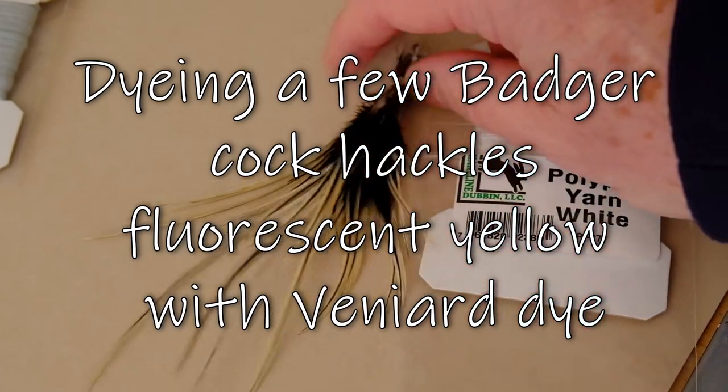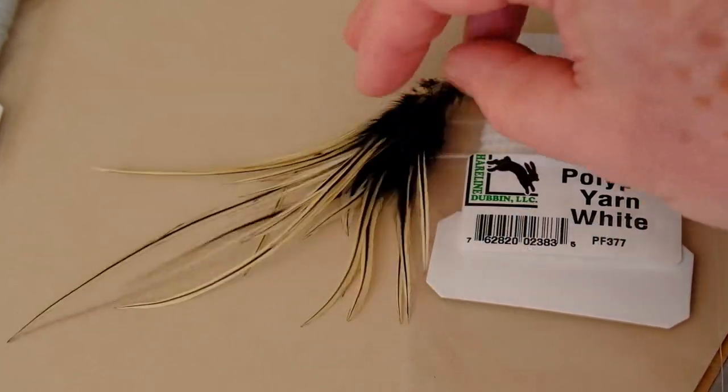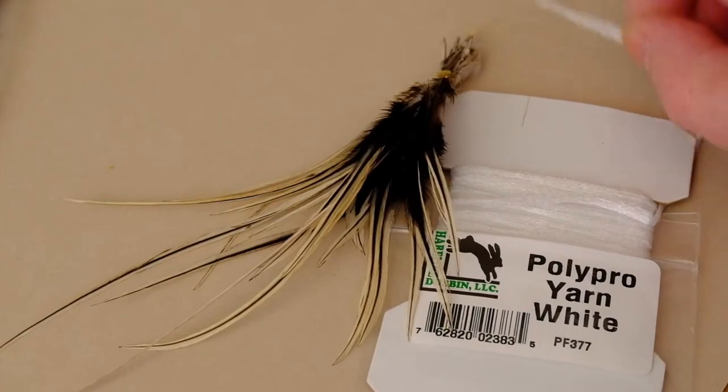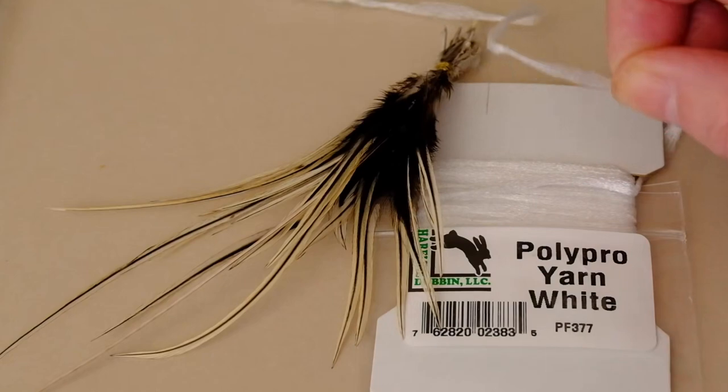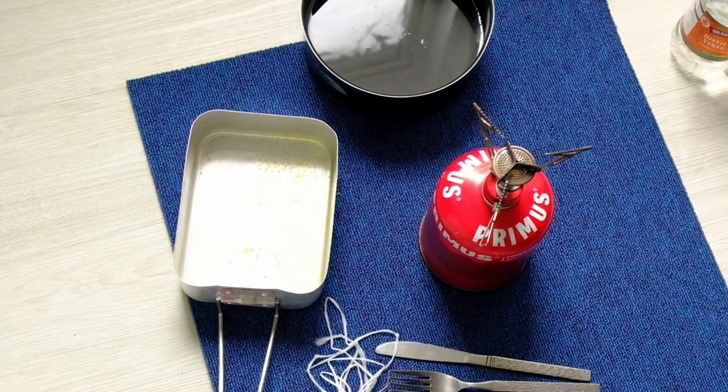Today I'm going to dye a few badger hackles fluorescent yellow with a fly I've got in mind to try, and also try and dye some poly yarn fluorescent yellow to use for parachute posts.